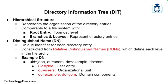The Directory Information Tree is a hierarchical structure representing the organization of directory entries, akin to a file system with a root entry at the top and various branches and leaves representing different entries. Each entry has a unique identifier called a Distinguished Name, or DN, which is a string representation of the path to that entry in the tree. The DN is composed of a series of Relative Distinguished Names, or RDNs, each representing a single level in the hierarchy. For example, a DN for a user entry might look like: uid=jdoe, ou=users, dc=example, dc=com.